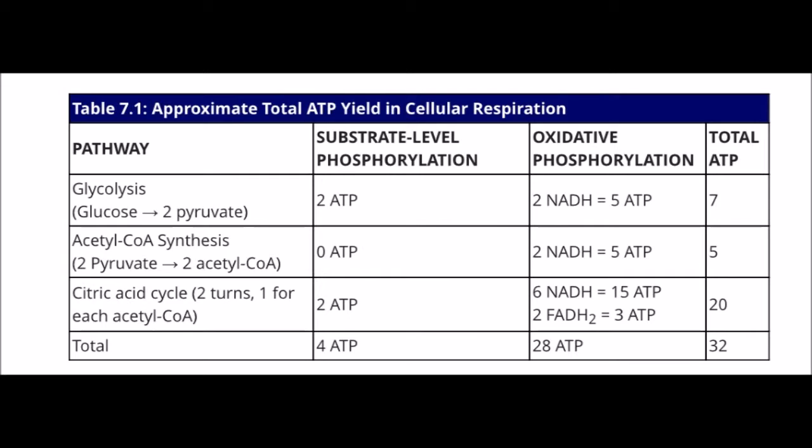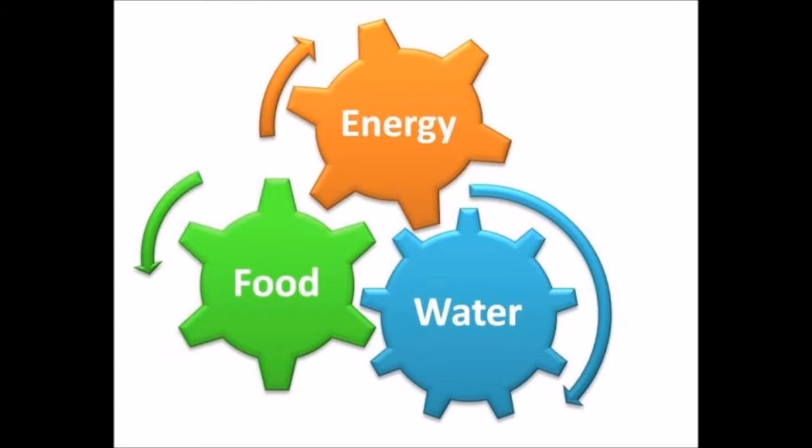On average, 32 to 36 ATP molecules are produced per glucose molecule during the process of cellular respiration. The goal of cellular respiration is to take the energy from food that we eat and make ATP that our bodies can use.